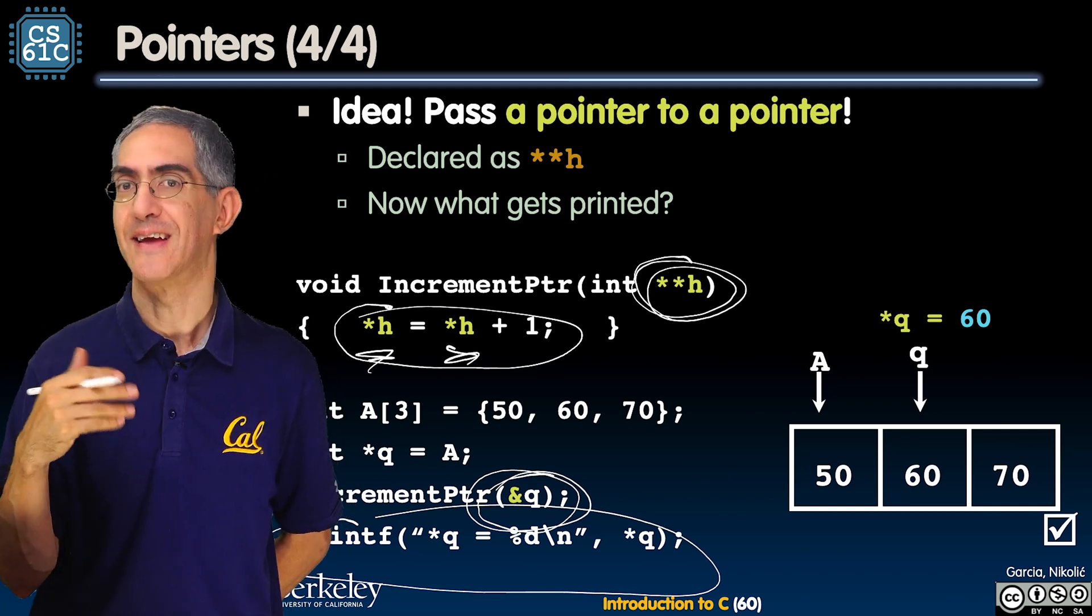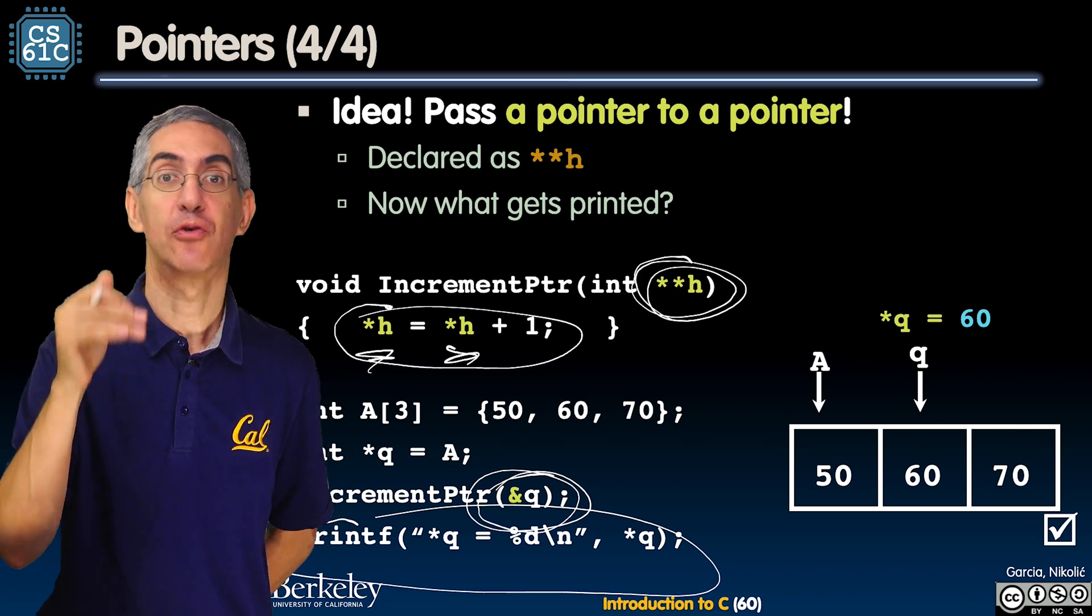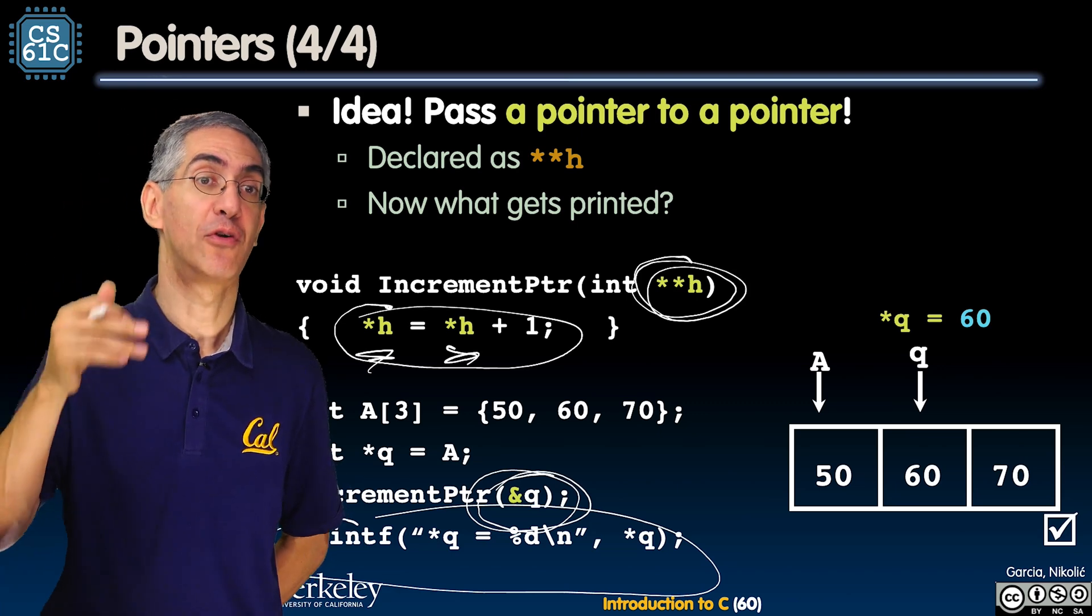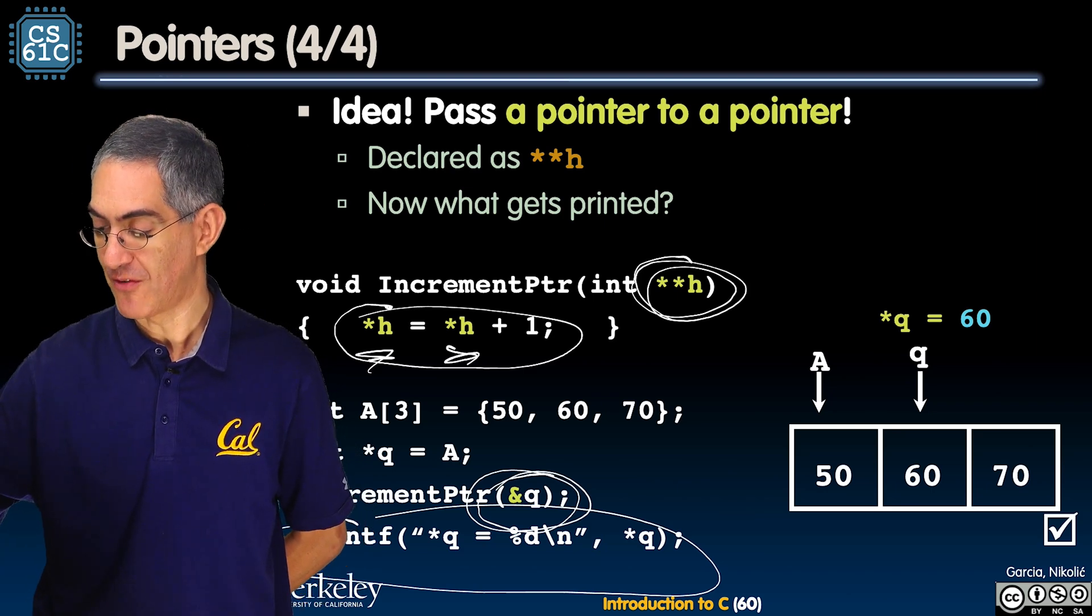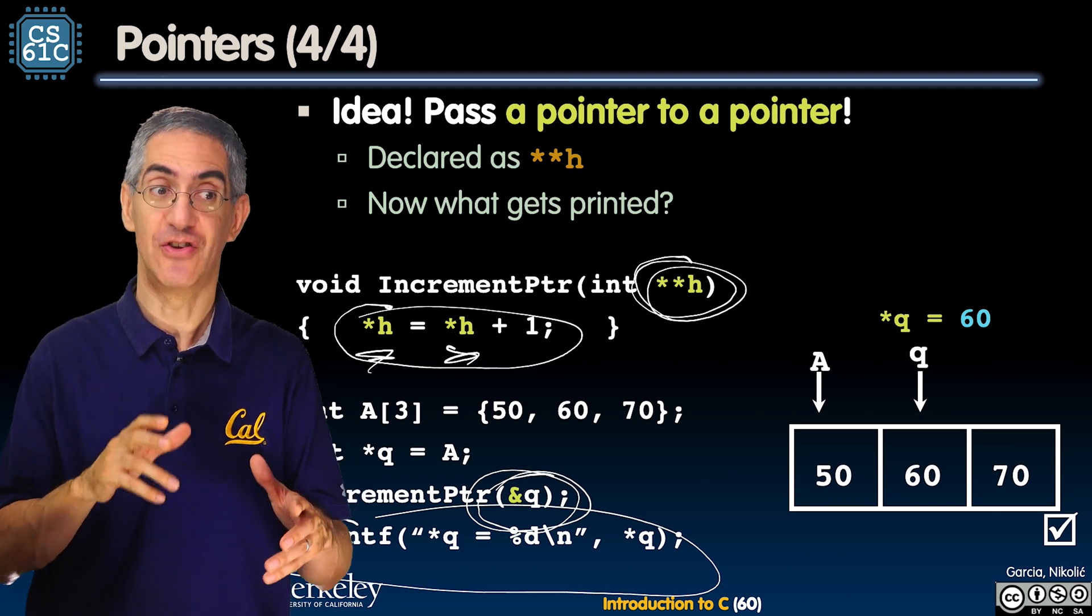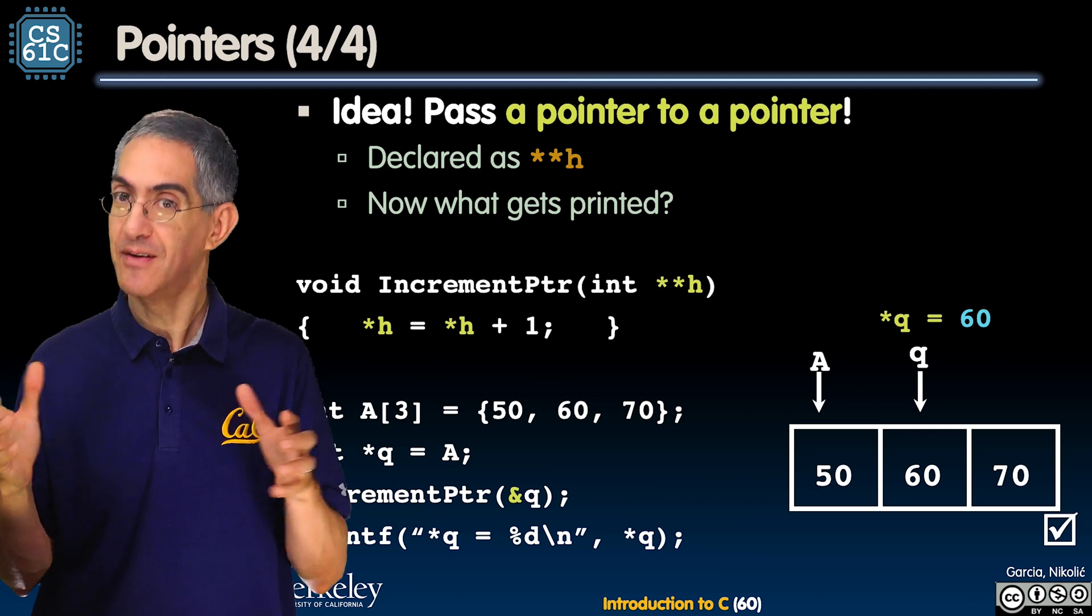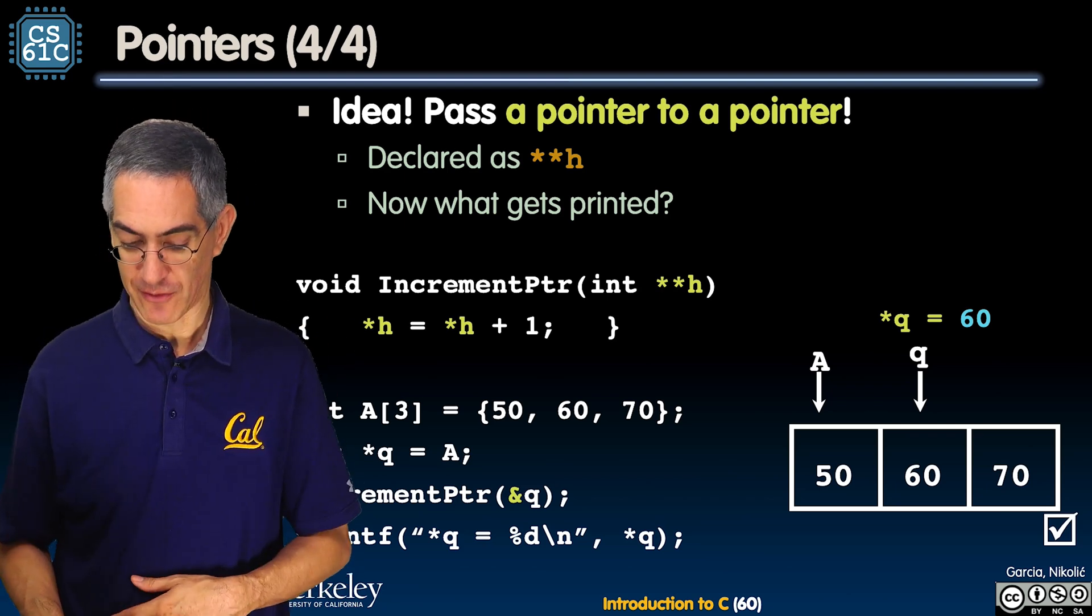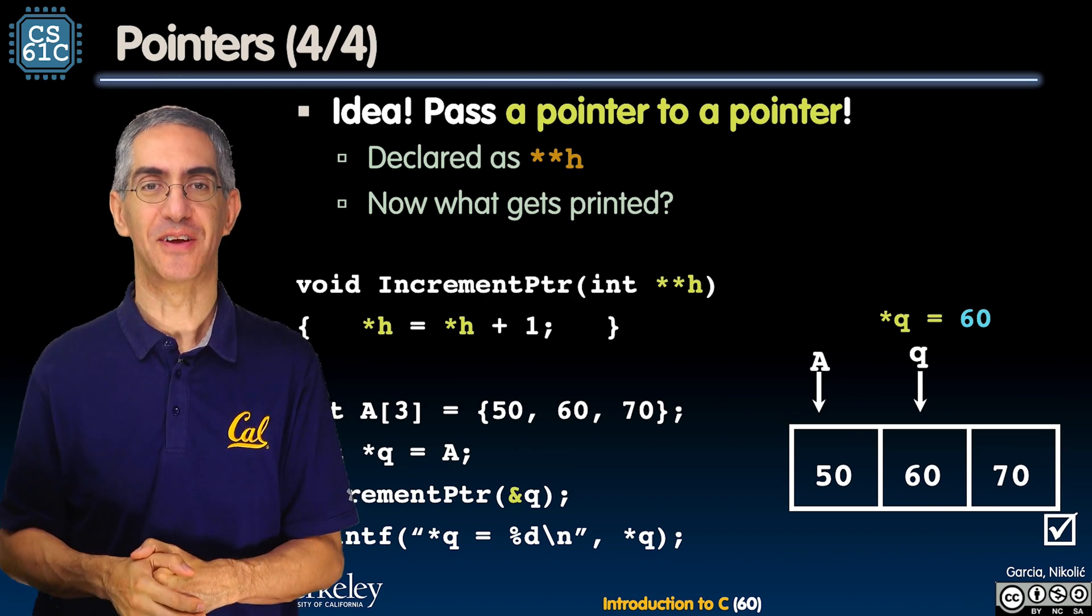Same idea and you're gonna say well Dan, what if I have a pointer to a pointer to a pointer? The answer is yes, you can have a pointer to a pointer to a pointer - three stars. Pointer to a pointer to a pointer, four stars. You typically don't have more than two stars in the code and if you have three either you know what you're doing, it's really complicated code, or you probably don't need to have it. So think about trying to remove that if you can. But it gets more complicated once you have three layers. But people have handles all the time which is a reasonable thing to do.